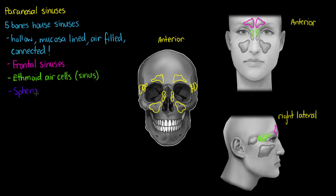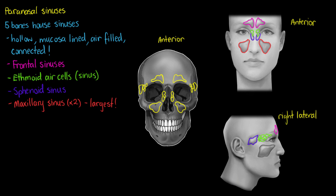Next is our sphenoid sinus, or sphenoid sinuses, once again named after the bone they're housed in. These sinuses are quite easy to name — they're all just named after the bone they come from. I'm outlining them now in purple. They are more posterior to the ethmoidal air cells. Our next and largest sinuses are the maxillary sinuses, and we classify those as two because our maxillary bone is fused into two units. They are by far the largest of the sinuses we have in the skull.